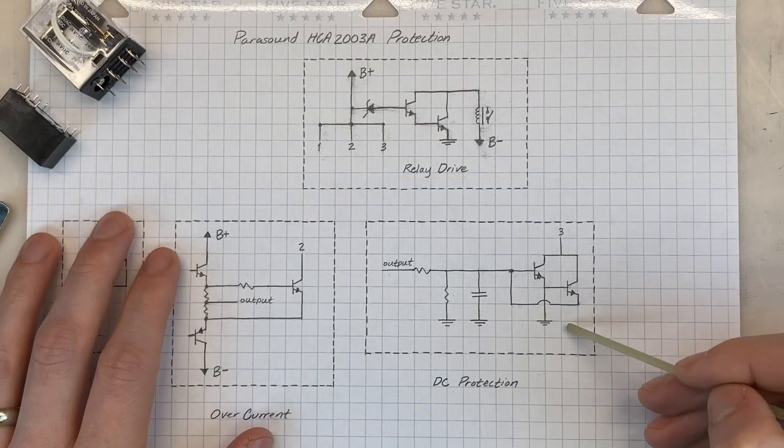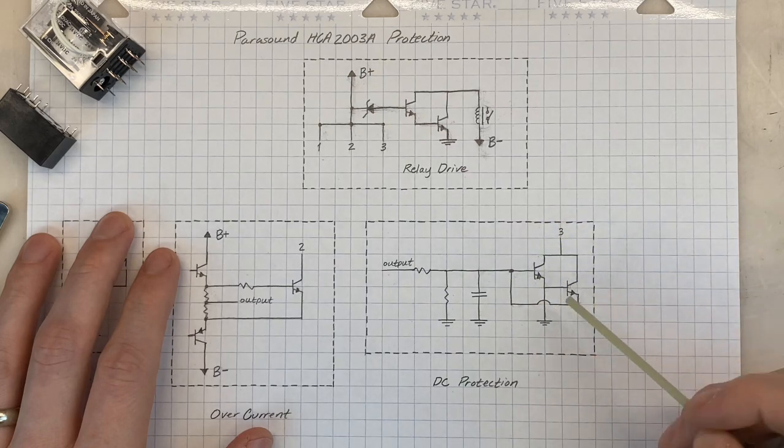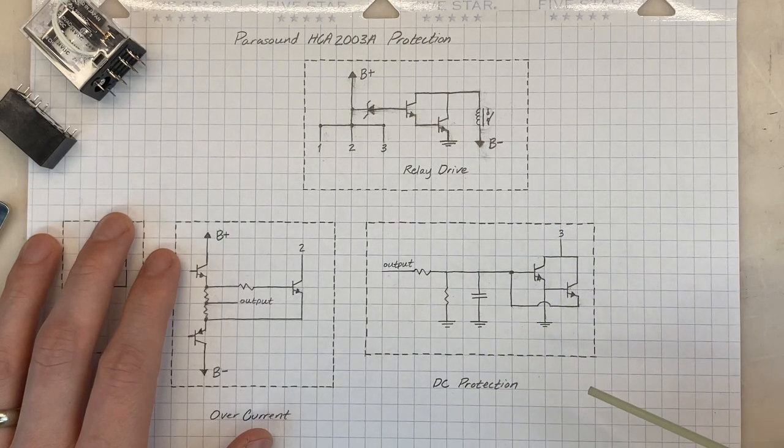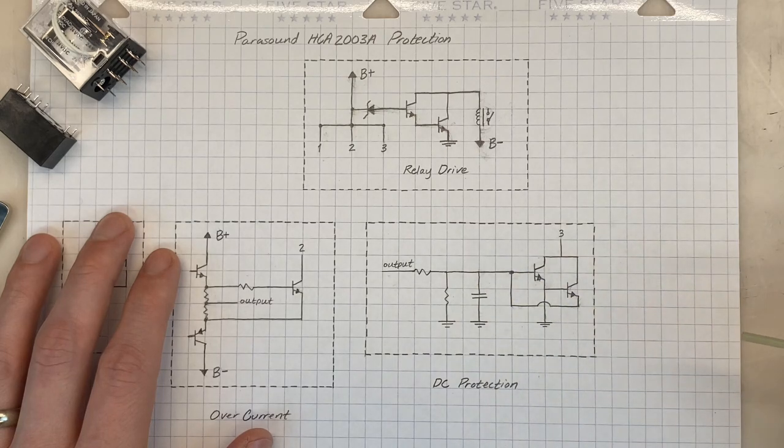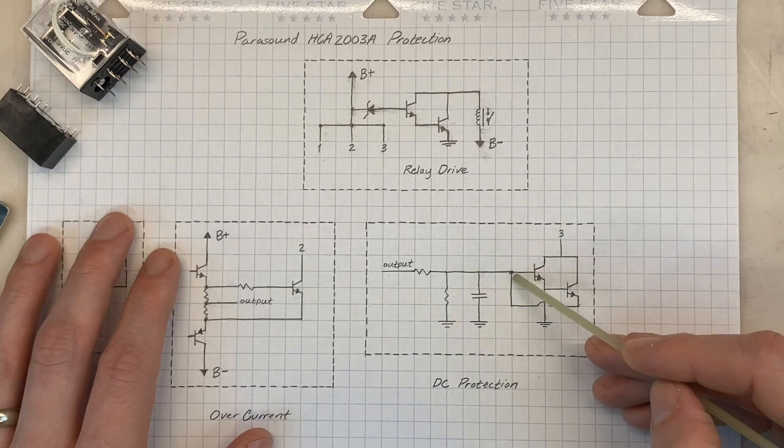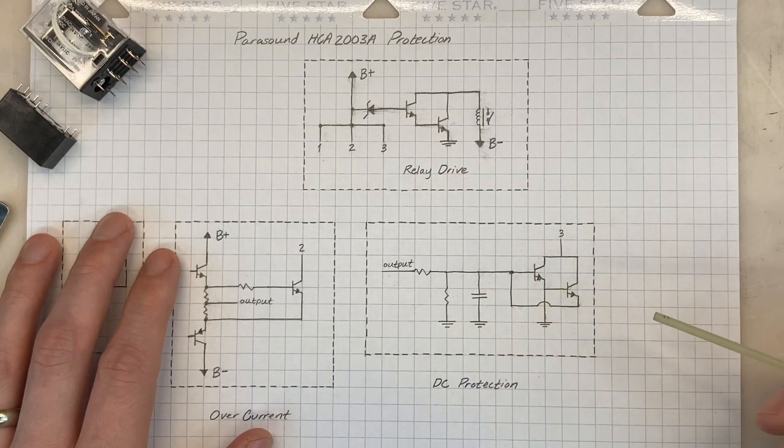And sub-circuit 3 is DC protection. These two transistors are monitoring the output of the amplifier. Any DC voltage at the output will be stored at this point via this capacitor. Under normal conditions, the voltage at this point will be low enough such that this transistor and this transistor are both off.